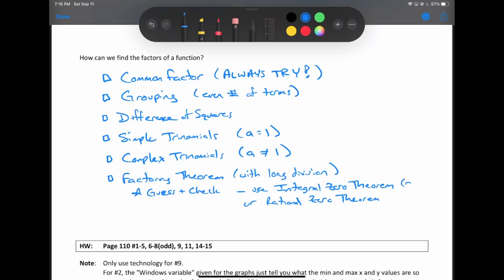or the rational zero theorem. And again, integral zero theorem is if the leading coefficient is one. Rational zero theorem is if the leading coefficient is not equal to one.